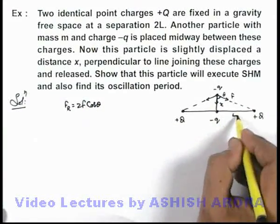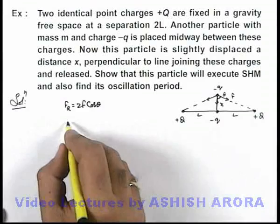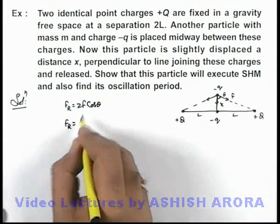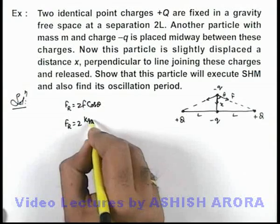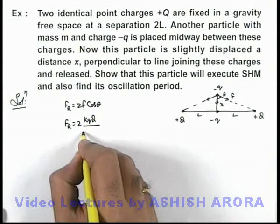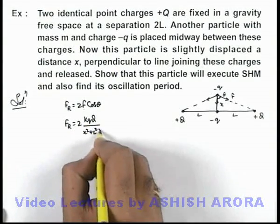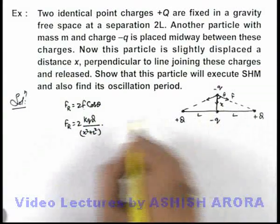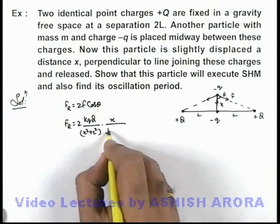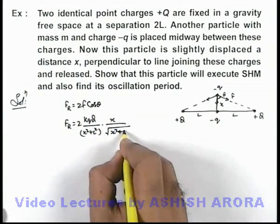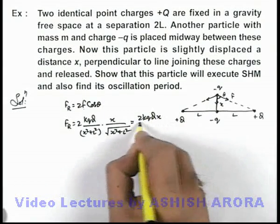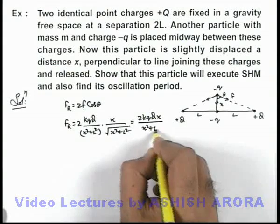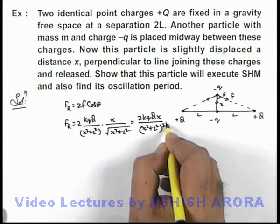In this triangle, as this length is L, cos θ can also be substituted. Here, twice F is given by Coulomb's law: kQq/(x² + L²). And cos θ we can write as x/√(x² + L²). So this becomes 2kQqx/(x² + L²)^(3/2).